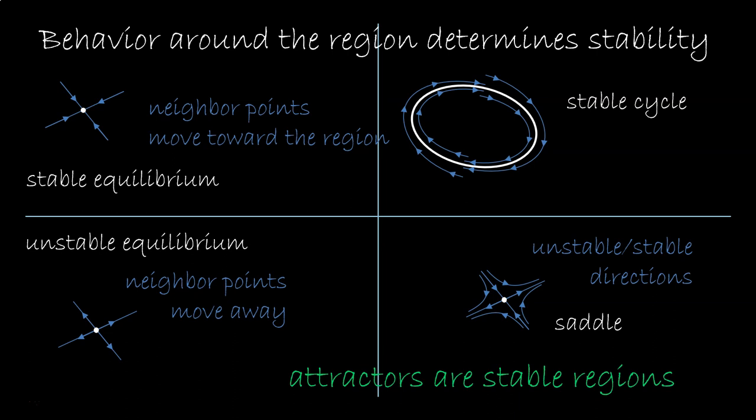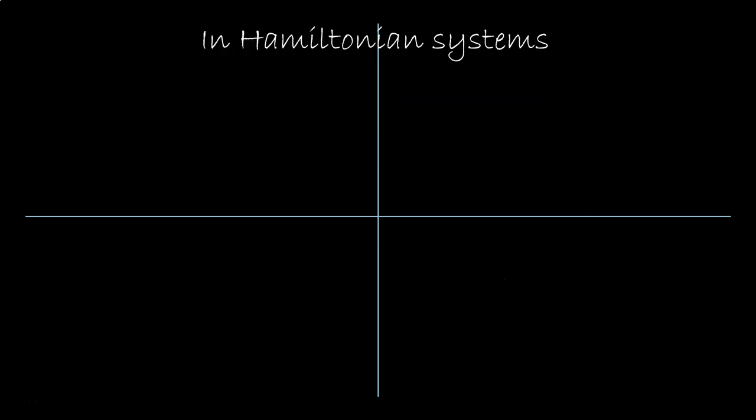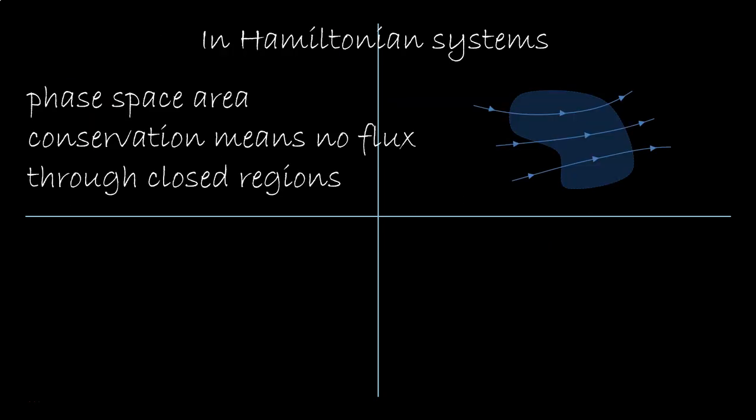Now, those definitions apply for a generic system, but we are looking at Hamiltonian systems in particular. Hamiltonian systems, Liouville's theorem tells us, conserve phase space areas. This means you can't have a net flux through a closed region. As many states flow in, as many states flow out.